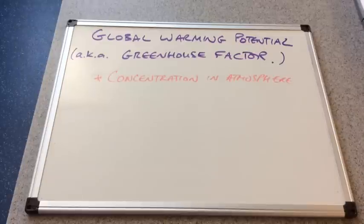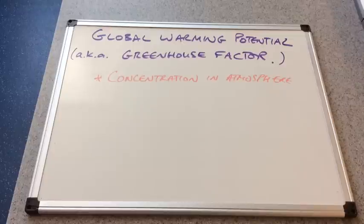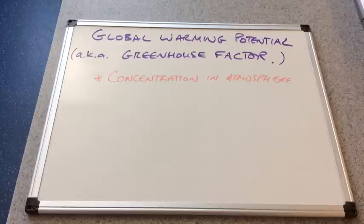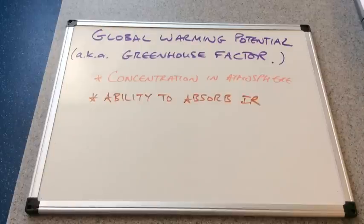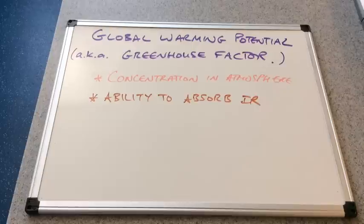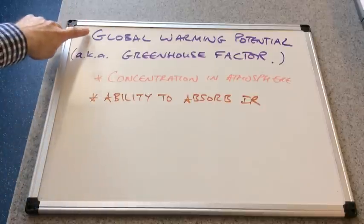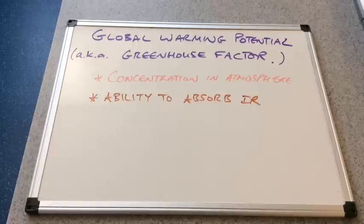So obviously the first factor is going to be how much of the gas is in the atmosphere. So if there's a high concentration of this particular gas in the atmosphere then it's obviously going to have more of a greenhouse factor than something with a low concentration. Now the second factor: the gas has to be able to absorb and obviously then re-emit infrared. So both of these factors play a part in determining the global warming potential of the gas or its greenhouse factor.